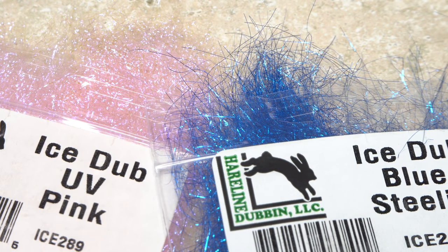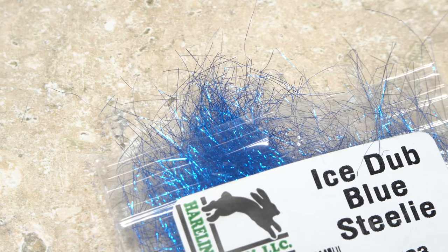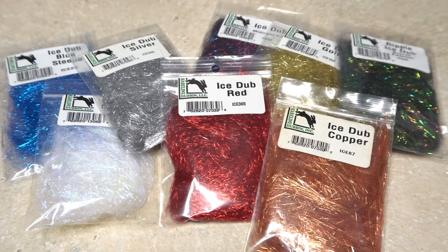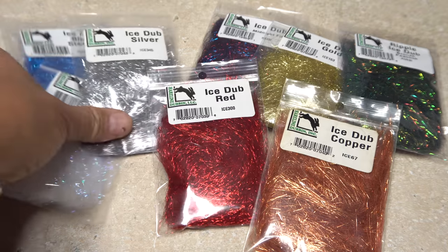Apparently, not all ice dub is created equal. I prefer the stuff like the blue on the right, which more closely resembles small flashabou than actual dubbing. There are a number of ice dub colors that are like this. Here I'm going to use three colors: steely blue, pearl, and silver.